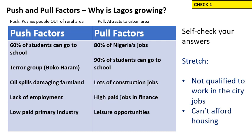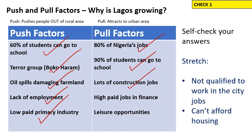Okay, this is our first check. On your table, push factors: 60% of students can go to school; a terror group pushing people out of the rural area; oil spills damaging farmland; lack of employment and low paid primary industry such as farming. Pull factors: 80% of Nigeria's jobs; 90% of students can go to school; lots of construction jobs — secondary industry; high paid jobs in finance and leisure opportunities. Give yourself a score out of ten.